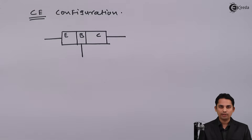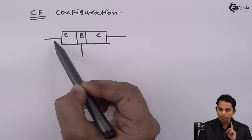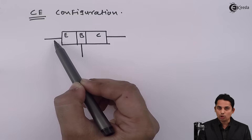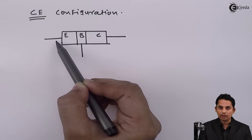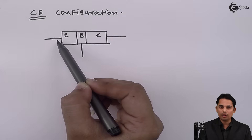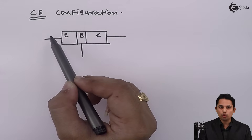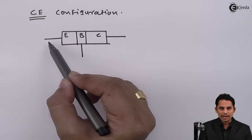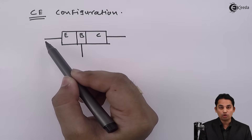In the common emitter configuration, the emitter is the common point. So the input will be base to emitter, whereas the output will be collector to emitter. We join base to emitter and collector to emitter accordingly.